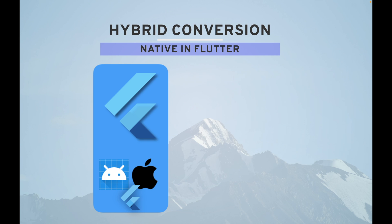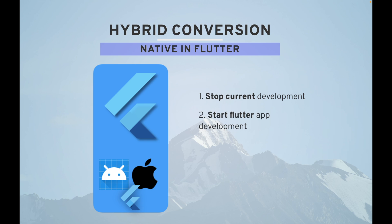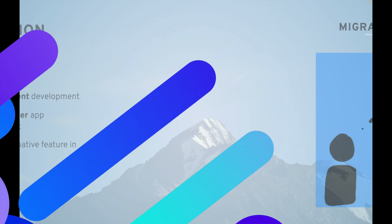The next hybrid option is native in Flutter — you have a Flutter app and inside it you add native features. Here you do have to stop your current native development and start Flutter app development, but you can embed native features inside your Flutter app. For example, if you already have AR/VR built natively that you don't want to change, you can add that native feature into your Flutter app and have all other modules in Flutter.